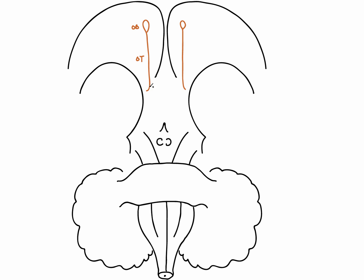The olfactory bulbs are continuous with the forebrain via the olfactory tracts. The cribriform plate is a series of apertures, and these apertures allow the actual olfactory nerves to pass through into the nasal cavity, where they are within the nasal mucosa. Here we can see the olfactory nerves passing through the apertures of the cribriform plate, the olfactory bulbs, and the olfactory tracts.